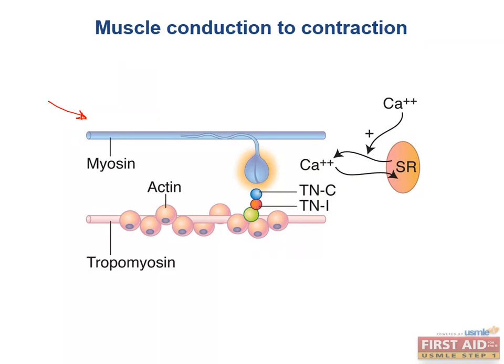Do you know why bodies develop rigor mortis after death? It's because after death, ATP generation ceases, and there's no more ATP available to bind the myosin and to release the cross bridges.